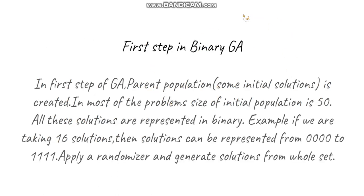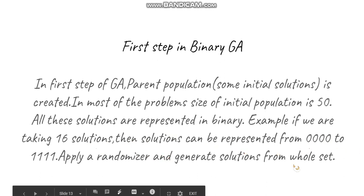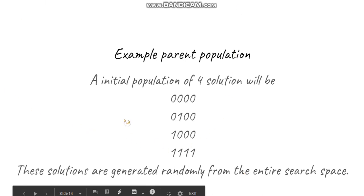The first step in GA maps to creating a parent population — called creating the initial population in the program. In this step, we randomly choose solutions (for example, 50) from the entire search space, all represented in binary. If we are taking 16 solutions, we generate them randomly from the whole set. This is an example of an initial population where only 16 solutions have been selected.